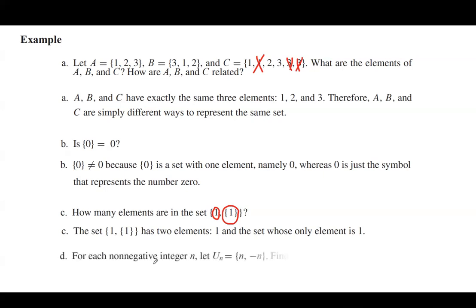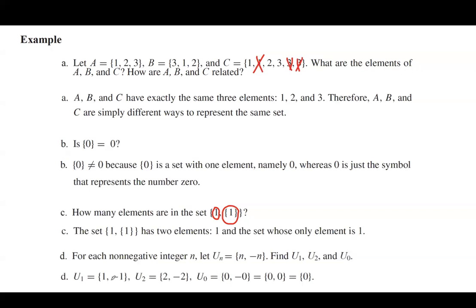For each non-negative integer n, suppose u sub n is the set including n and negative n. Find u sub 1, u sub 2, and u sub 0. You basically need to plug in one wherever you see n, plug in two wherever you see n, and plug in zero where you see n. The calculation is very easy — it's basic algebra. U sub 1 includes two members: one and negative one. U sub 2 has two members: two and negative two. U sub 0 has only one member, which is zero, because there is a repetition and we can ignore the second zero.